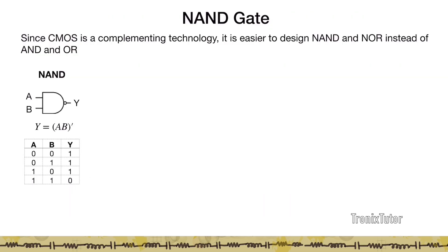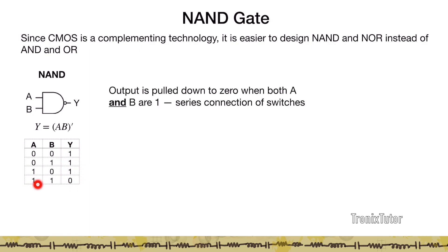Since CMOS is a complementing technology, we normally design NAND and NOR gates instead of AND and OR gates, simply because complementing is easier. Let's look at a two-input NAND gate with inputs A and B. The output Y is defined as (AB)'. Looking at the truth table, Y is mostly one and only goes to zero when both A and B are one. So the output is pulled down to zero when both A and B are one, meaning the pull-down network should be a series network of switches.